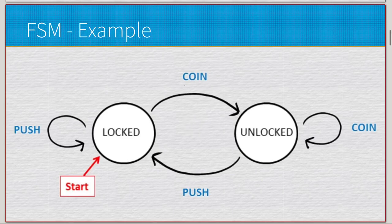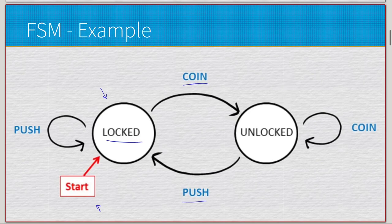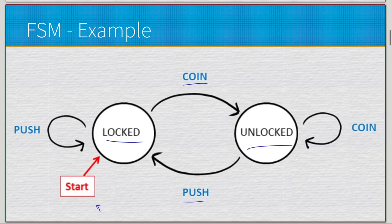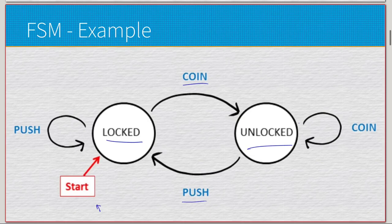We have some device that takes in coins and has a button to push. We start in a locked state — these circles indicate the individual states of the system. We have a locked state and an unlocked state, with inputs of coin (inserting a coin) and push (pushing a button). If we're in the locked state and keep pushing the button, it stays locked. The moment we insert a coin it goes into the unlocked state. Once unlocked, pushing the button returns it to the locked state.